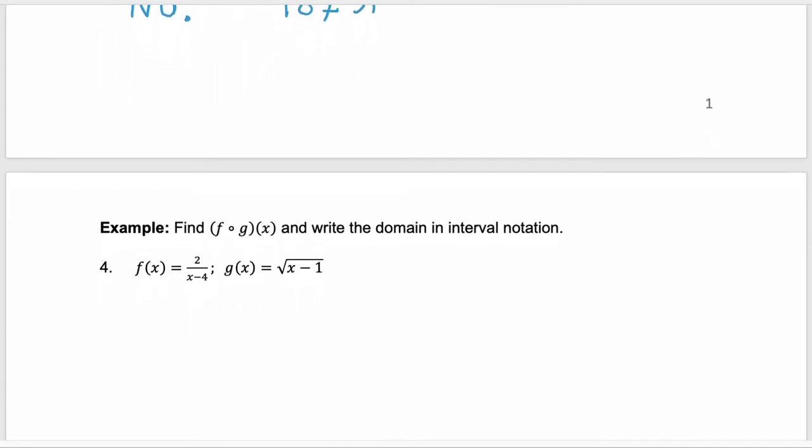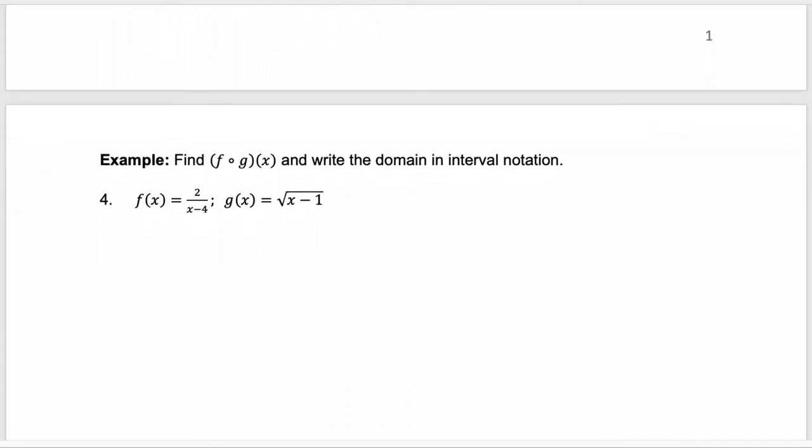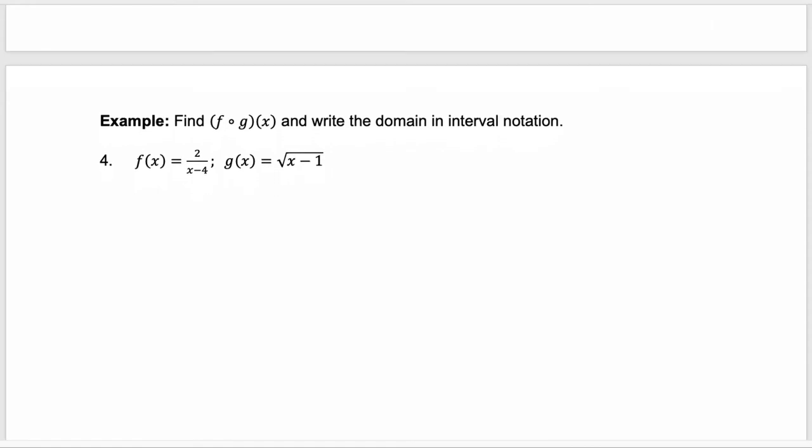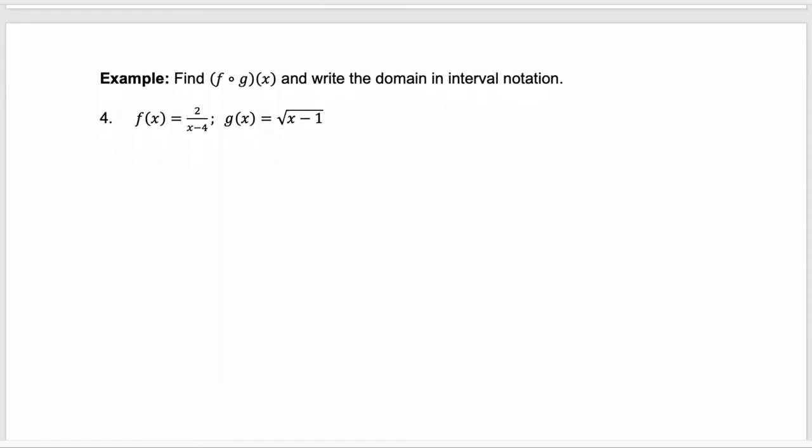Okay, here we need to find f of g of x and then we need to write the domain of that new composition in interval notation. So here we don't have values for x. We're simply creating a combined function, a composition. To do that, remember that this format f of g of x is the same as f of g of x.